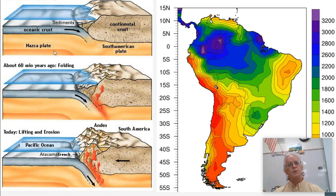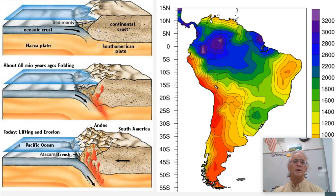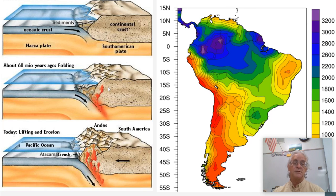What we see here is we have the geography. The geography is that we have a convergent plate where the oceanic crust is coming in and going underneath. This leads to lots and lots of pressure, which will lead to the Andes Mountains. Because it's subducting, it's going to cause volcanoes in the area also.